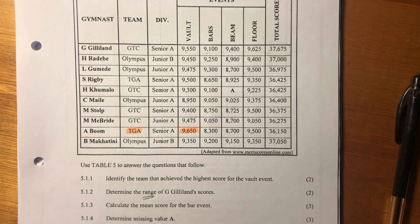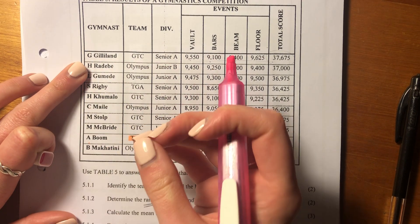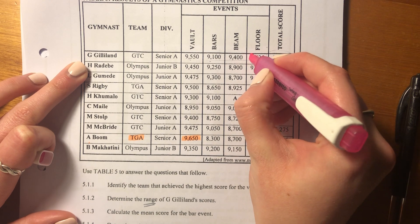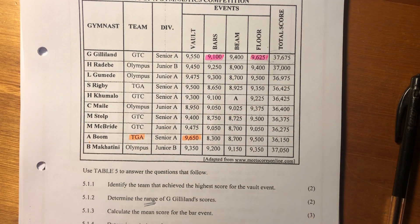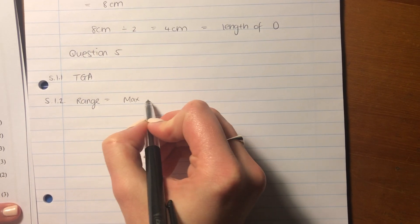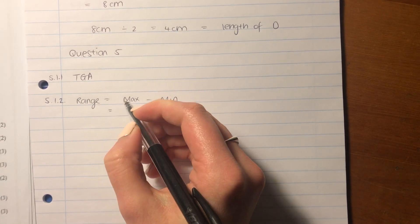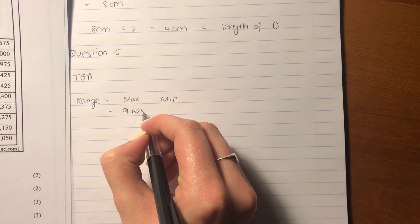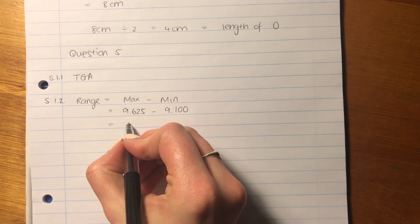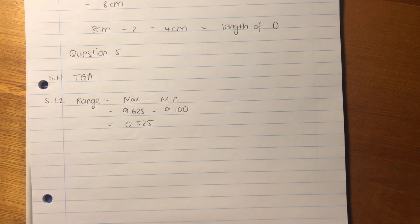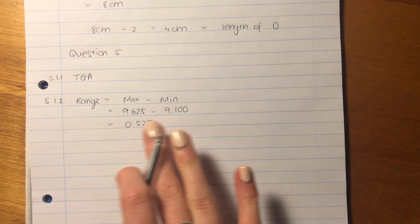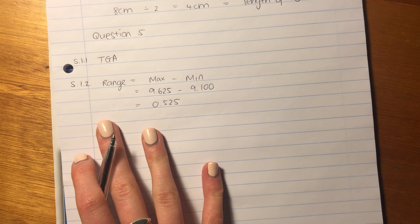Let's first find G. Gilliland, who is at the top. The range means the highest score minus the lowest score — maximum minus minimum. Range equals max minus min. For Gilliland, that is 9.625 minus 9.100. The range is 0.525.